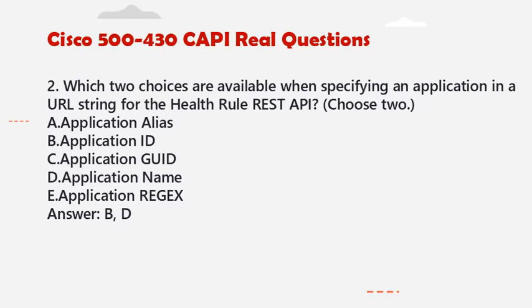Question 2: Which two choices are available when specifying an application in a URL string for the health rule REST API? Choose two. A. Application alias. B. Application ID. C. Application GUID. D. Application name. E. Application regex. Answer: B, D.